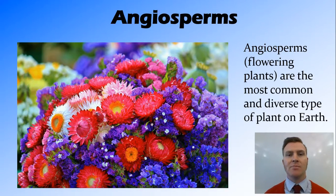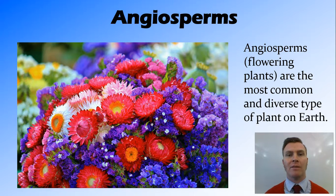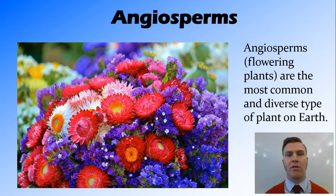Angiosperms is the fancy name for flowering plants. This is any plant that has a flower — what we think of as flowers, the pretty ones, as well as some things we don't really think of as flowers. Most grasses are angiosperms and have a flower, and the title slide used for this video is actually the flowers on some grass. They're the most common and most diverse plants all across the earth, and generally the most pretty.